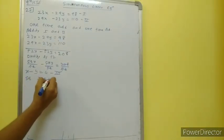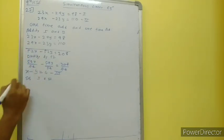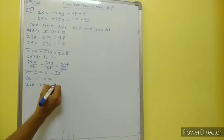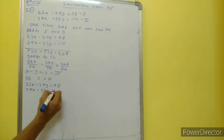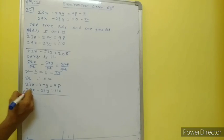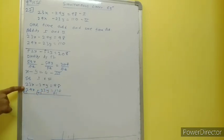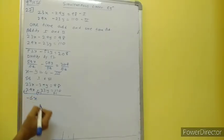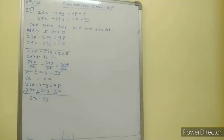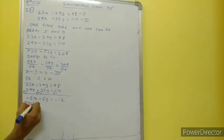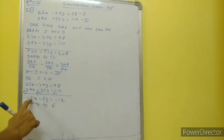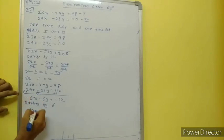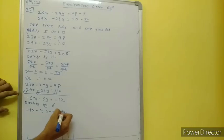Now subtracting equations 1 and 2. Subtract means all signs of the second equation will change: 23 minus 29 gives minus 6x; minus 29 minus (minus 23) gives minus 6y; and 98 minus 110 is minus 12. Dividing by 6: minus x minus y is equal to minus 2 — that is equation 4.